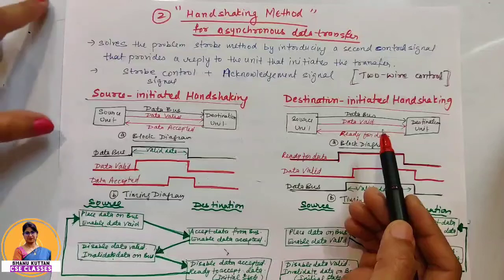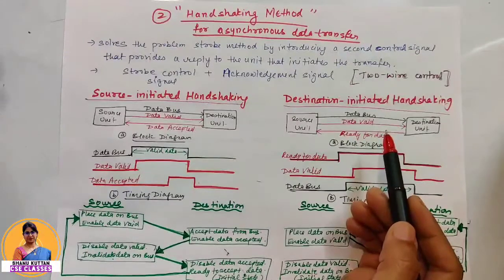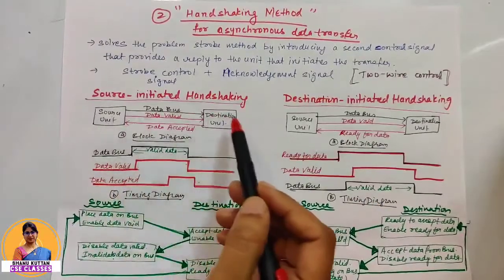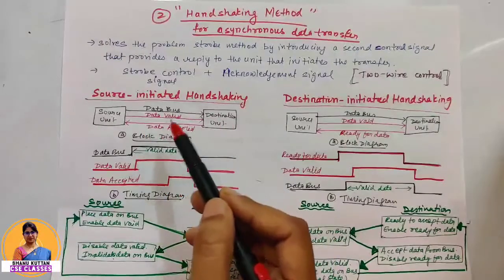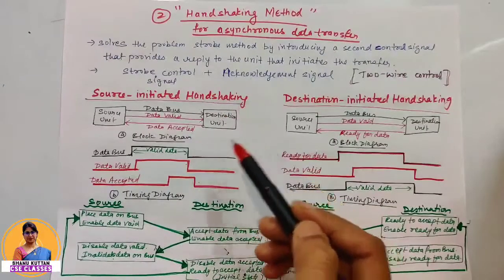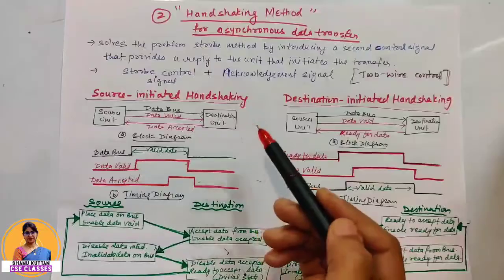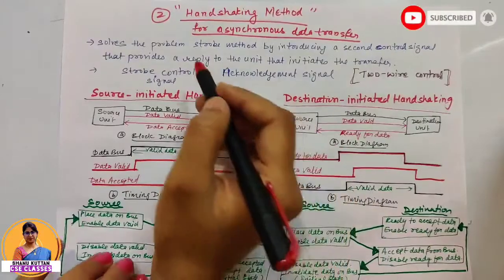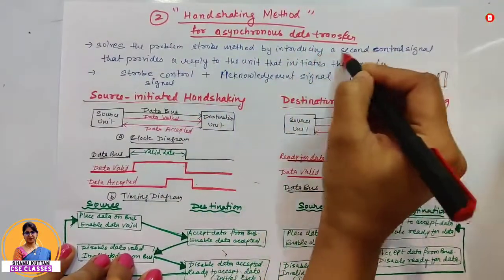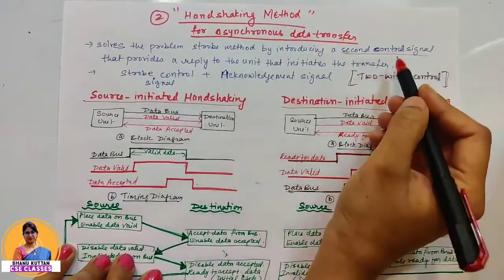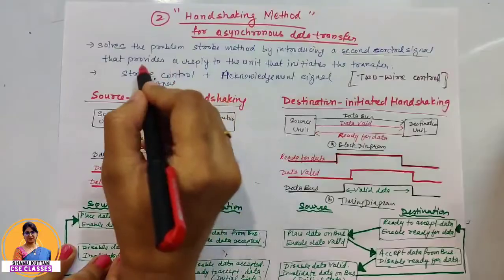The handshaking method is used to solve the problem in the strobe method. In strobe, generally one control signal is sent from source to destination indicating that valid data is available and the destination receives it. But if the destination has properly received the data or not, there is no reply signal. To solve this problem, we have introduced a second control signal.